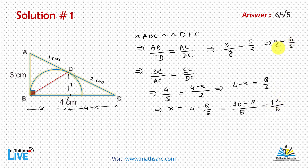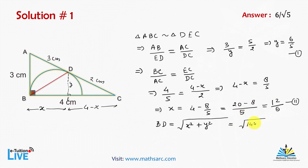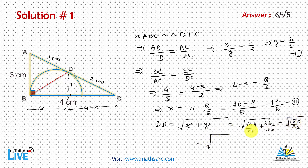So X is equal to 4 minus 8 by 5, which equals 12 by 5. Now by the Pythagorean theorem, BD equals the square root of X squared plus Y squared, which is the square root of 144 by 25 plus 36 by 25, equal to the square root of 180 by 25. Simplifying, this gives 6 upon root 5. So 6 upon root 5 centimeters is the answer.